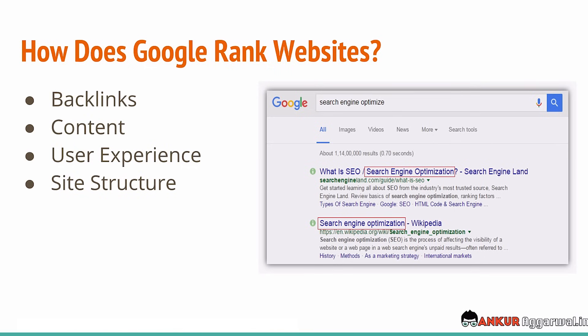Now let's talk about content. Content is king when we talk about SEO. The content should be comprehensive — it should be answering all the questions that a person has while searching for the keyword. If I'm searching for 'best credit card in India' and I click on the first result, and that article gives me all the details — the best credit card, comparison, tables, recommendation, pros and cons — then obviously that's a high quality article and I'll be spending more time on the website.